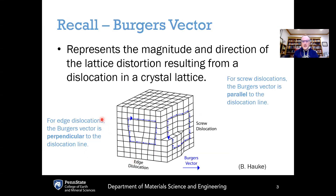Recall from last time, we have two main types of dislocations. There are edge dislocations, as shown here on the left, and screw dislocations, as shown here on the right. Remember from your crystal chemistry class that we can describe the magnitude and direction using a Burgers vector. If you make a circuit all the way around the dislocation, the difference between the beginning and the ending point gives you the Burgers vector. For an edge dislocation, the Burgers vector is perpendicular to the dislocation line, and for a screw dislocation, the Burgers vector is parallel to the dislocation line. The Burgers vector represents the magnitude and direction of the lattice distortion that results from this type of dislocation.